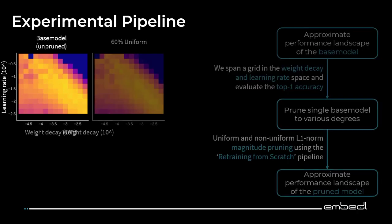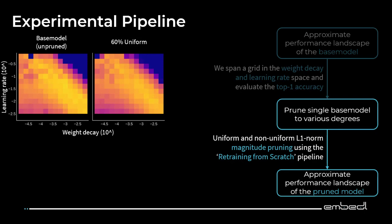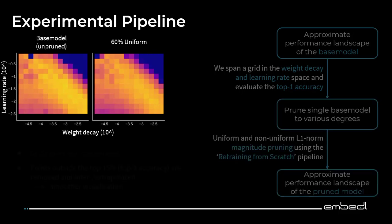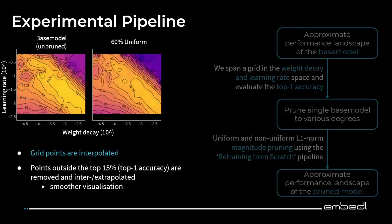After that, we prune our network. As mentioned, we're doing magnitude pruning and we retrain from scratch, at least in our first batch of experiments. In this example, we have 60% uniform pruning, meaning 60% of the FLOPs are remaining, and each layer is pruned down to 60%. For visualization, we are looking at contour plots, essentially interpolating the data. Since the grid size is quite small, the interpolation is quite accurate.